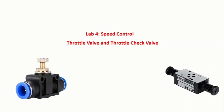You have the same concept for the throttle check valve, but the difference is: when using a throttle valve, the speed for both actuation and retraction is the same. When using a throttle check valve, based on the mechanism inside, the speed of retraction and advancing are going to be different — for either a single acting or double acting cylinder.